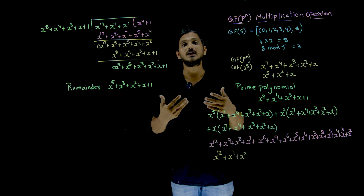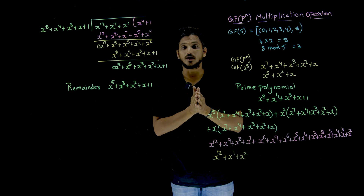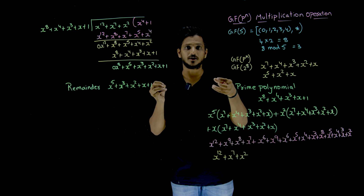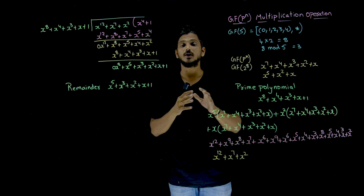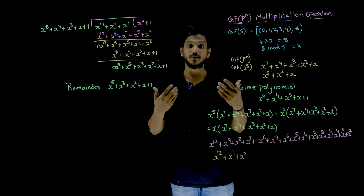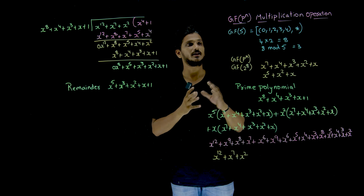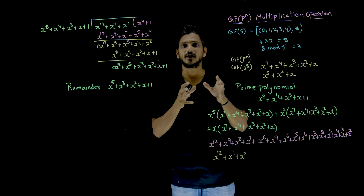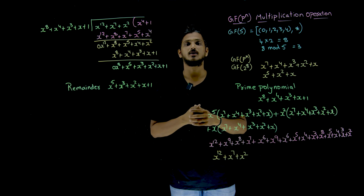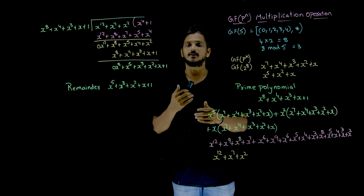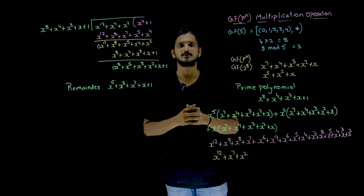We understood addition operation and we understood multiplication operation. In our next class, we will take an example, create a table, and understand whether inverse elements and identity elements exist for all of them — verifying whether it follows the properties of a field. Hope you understand this multiplication operation. If you have any questions, please post in the comment section below. If you haven't subscribed to our channel, please subscribe and press the bell icon for the latest updates. Thank you.